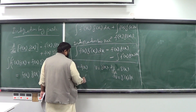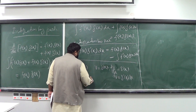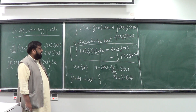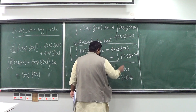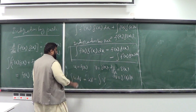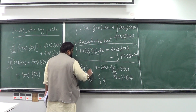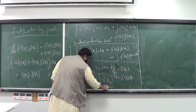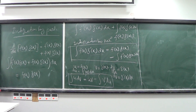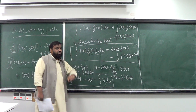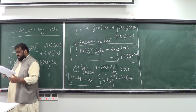This gives us the formula: the integral of u dv equals uv minus the integral of v du. This is another version of integration by parts. Both forms are useful. I'm going to use the f(x)g(x) version for most cases, but you can also use the u dv form.